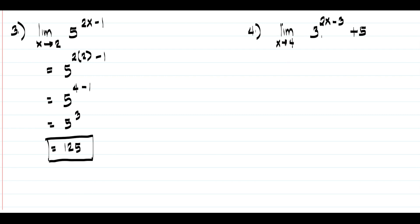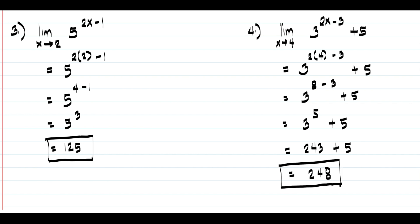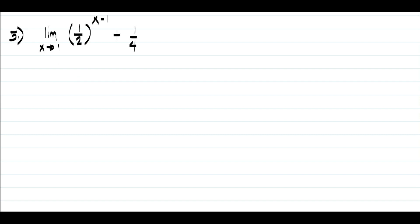In example number four, we have the limit of 3 raised to 2x minus 3 plus 5 as x approaches 4. Substituting gives us 3 raised to 2 times 4 minus 3 plus 5, which is 3 raised to 8 minus 3 plus 5. Since 8 minus 3 is 5, we get 3 raised to 5, which is 243, plus 5, giving us 248 as our answer.